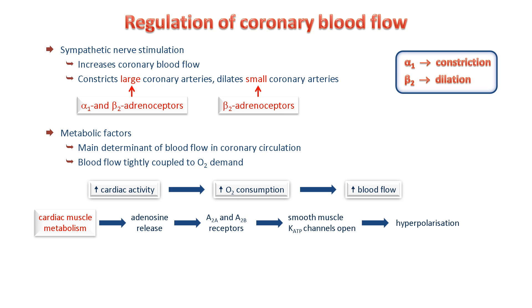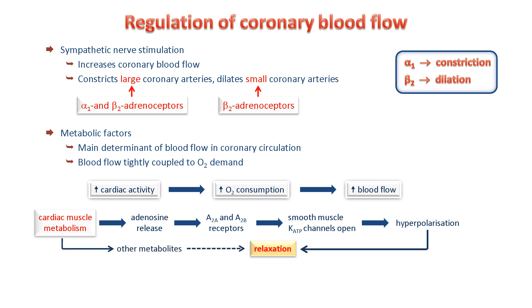When activated, these receptors open ATP-sensitive potassium channels in the muscle cell membrane. This causes membrane hyperpolarisation, which in turn closes the voltage-gated calcium channels, thereby limiting calcium entry into the muscle cells and causing relaxation. Other metabolites, such as lactate, can also influence vascular muscle and help to link blood flow to metabolism.